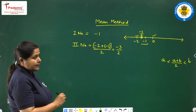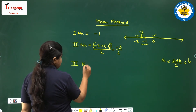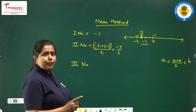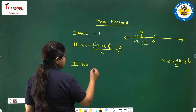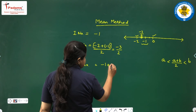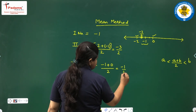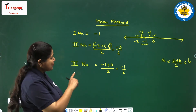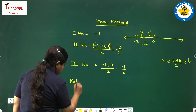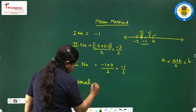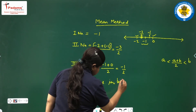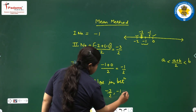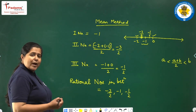For the third number, we find the value between minus 1 and 0 by adding and dividing by 2: (minus 1 plus 0) upon 2 gives us minus 1 upon 2. So the three rational numbers between minus 2 and 0 are minus 3 by 2, minus 1, and minus 1 by 2.